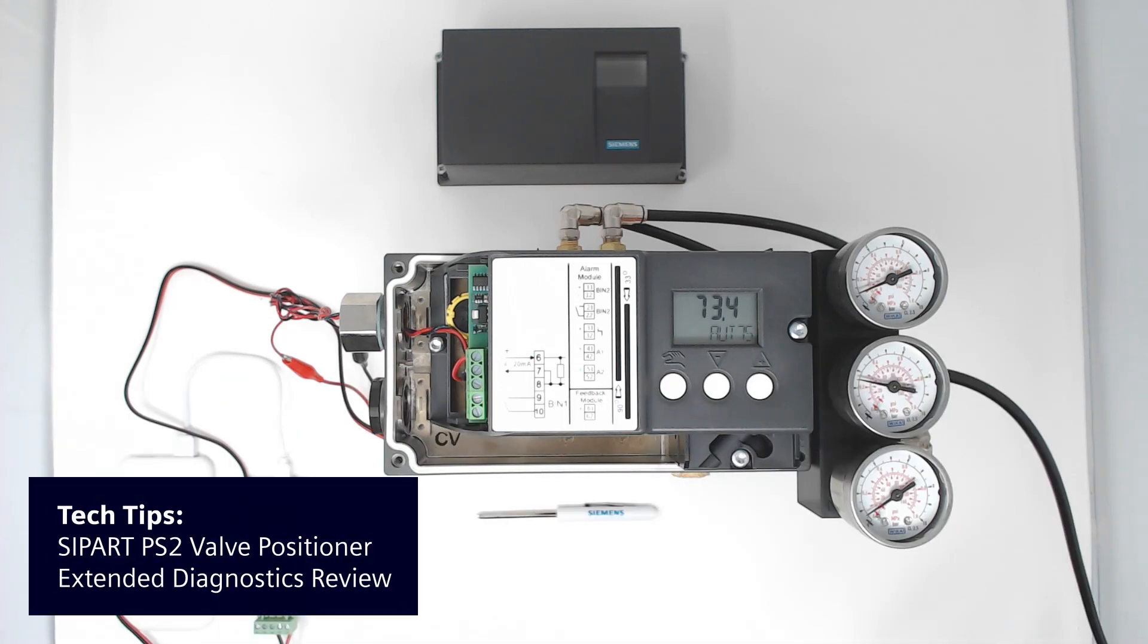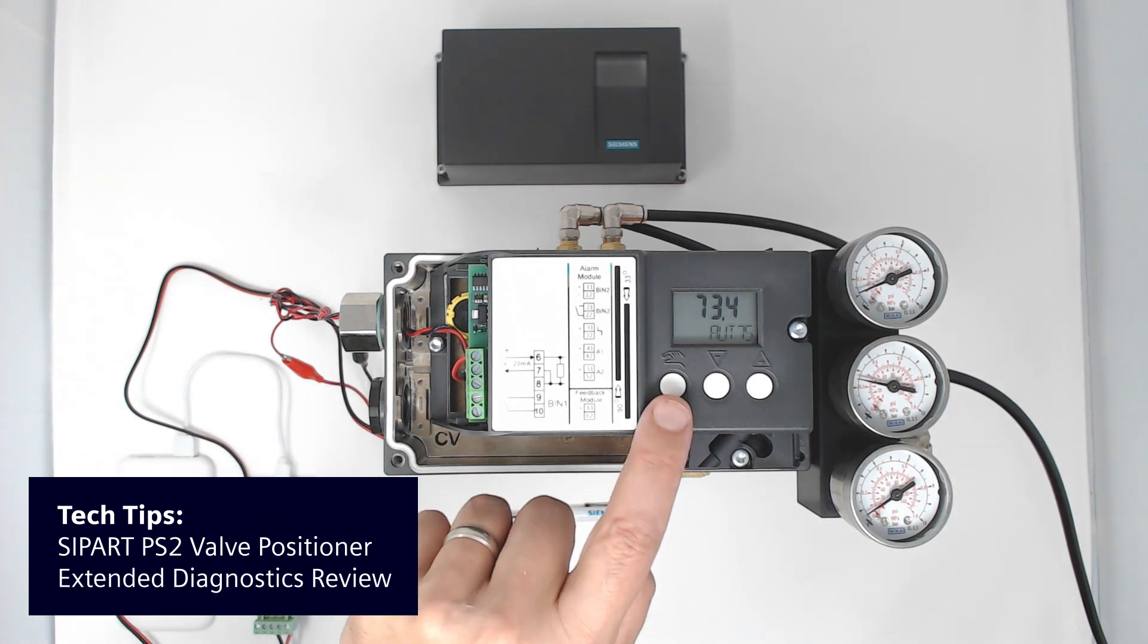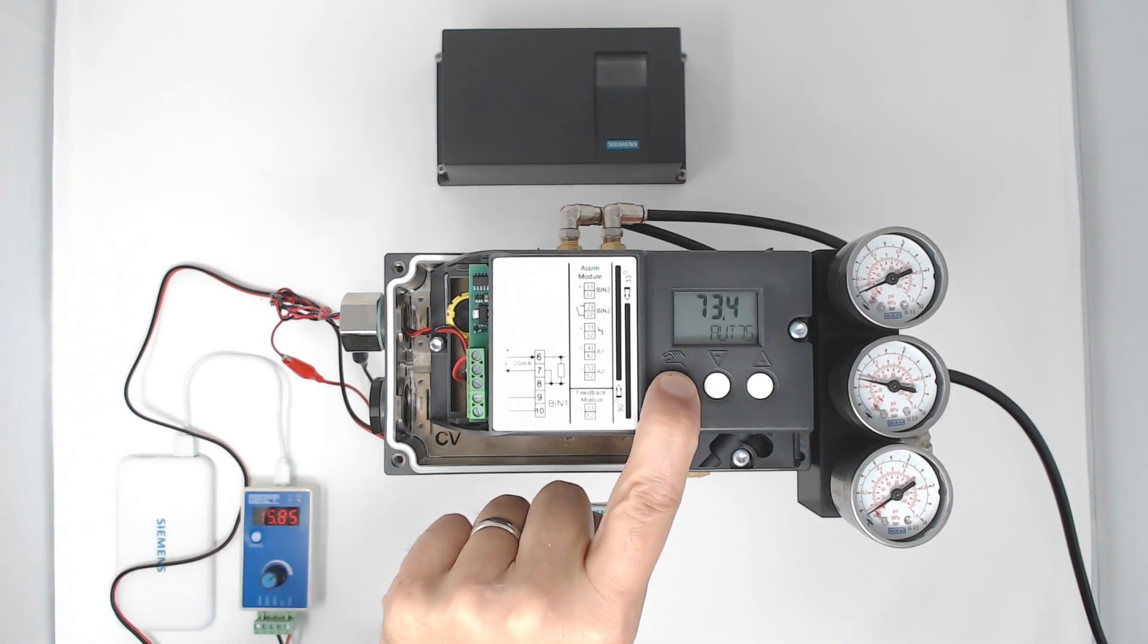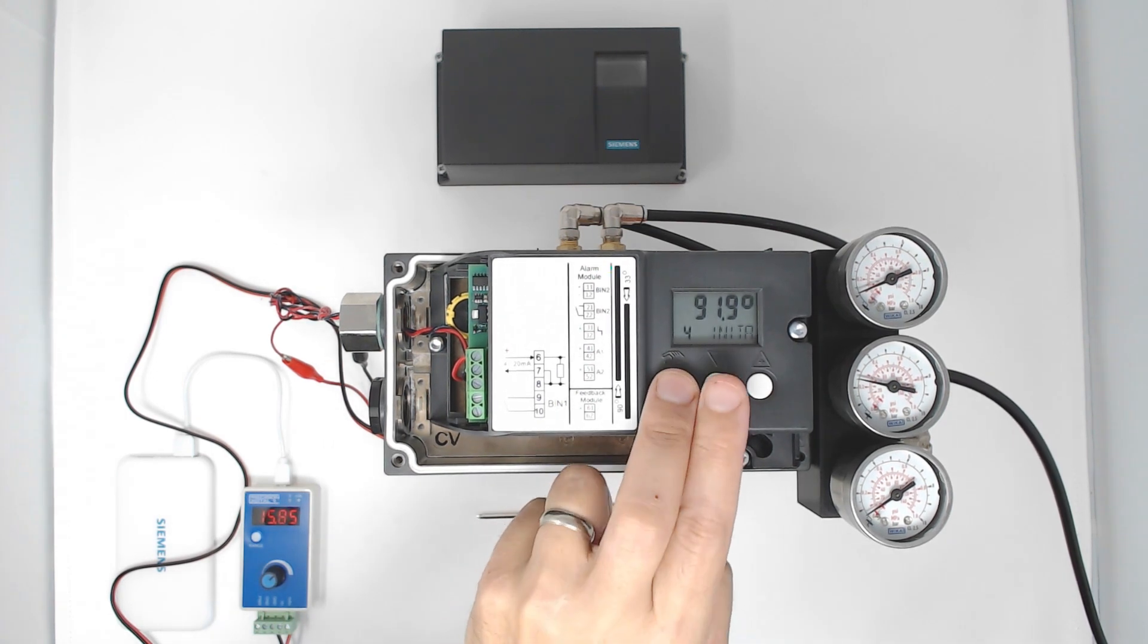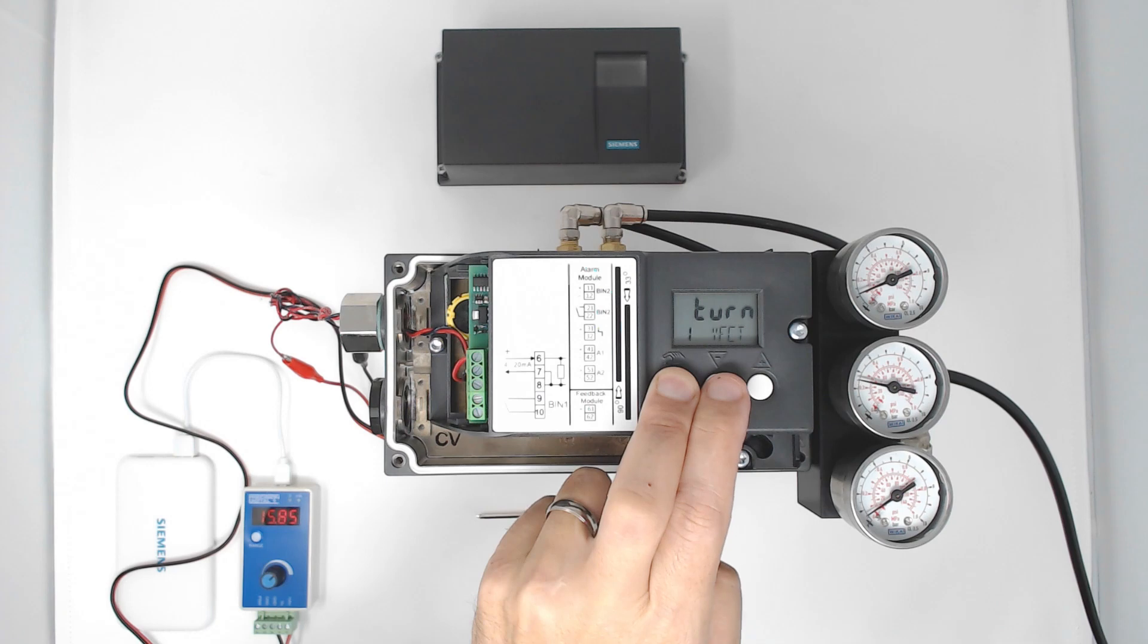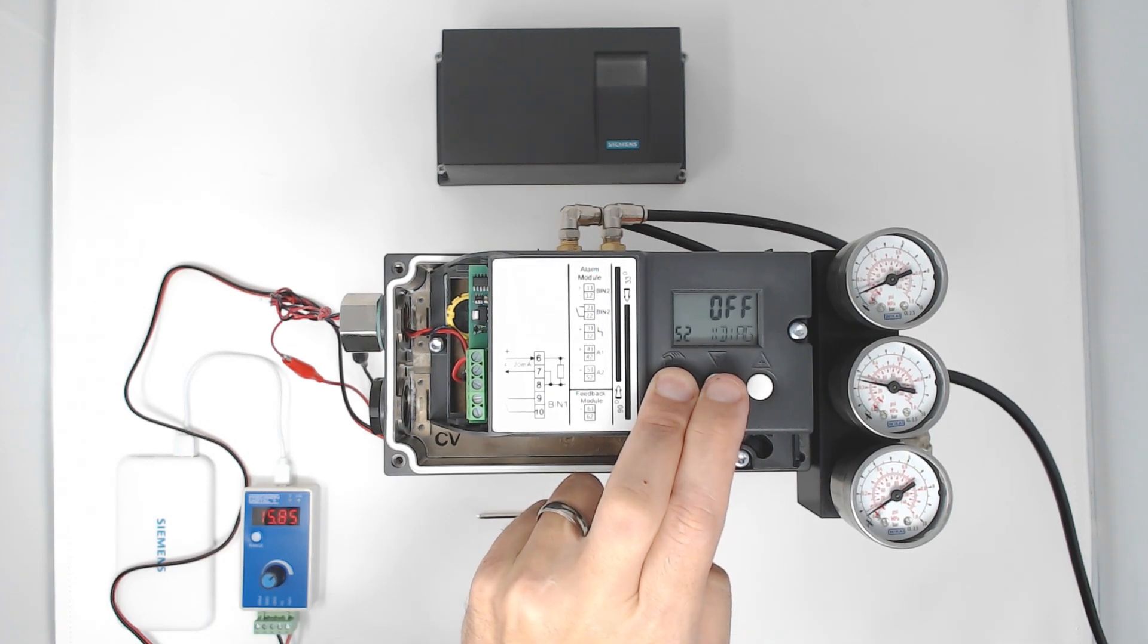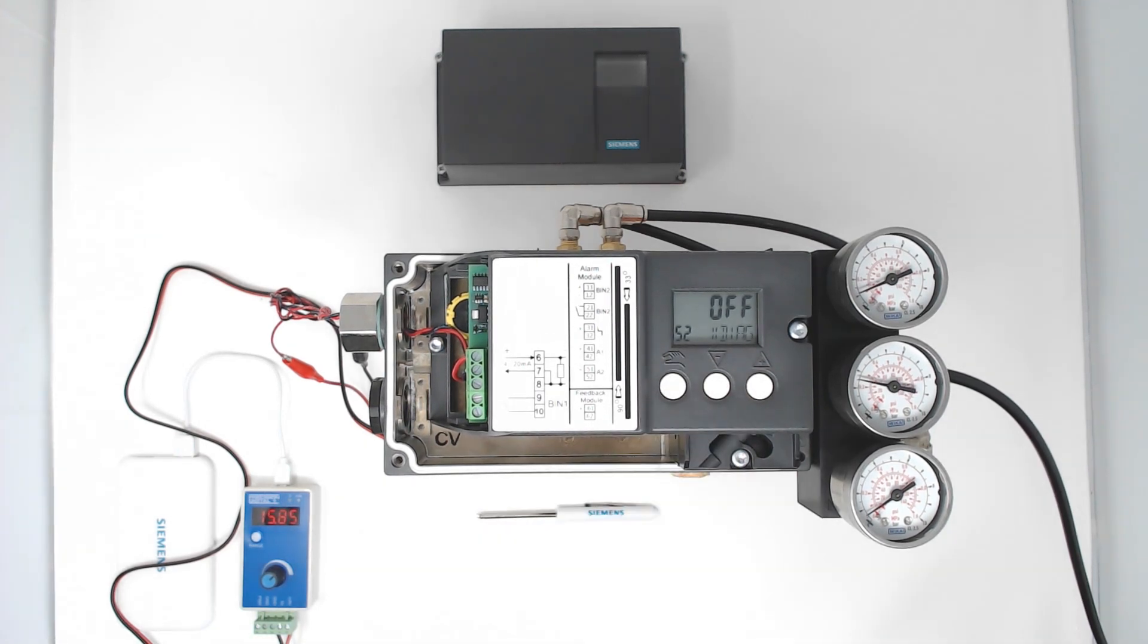The PS2 comes standard with extended diagnostics. This is available in the configuration menu. Press and hold the hand button, and it's one of the parameters at the end, so most likely go backwards in the menu system and you'll see extended diagnostics.